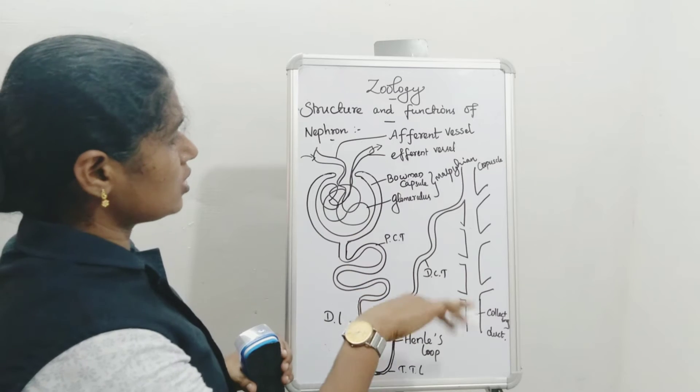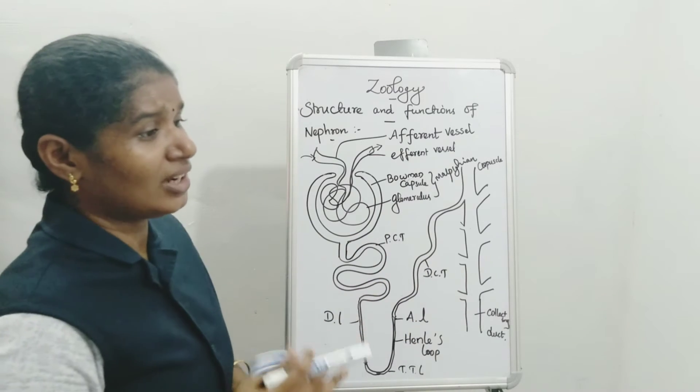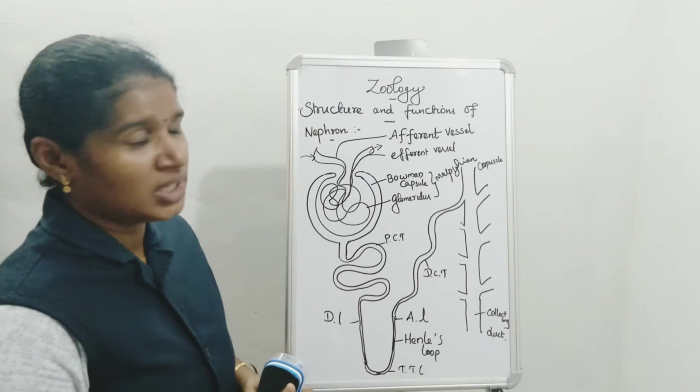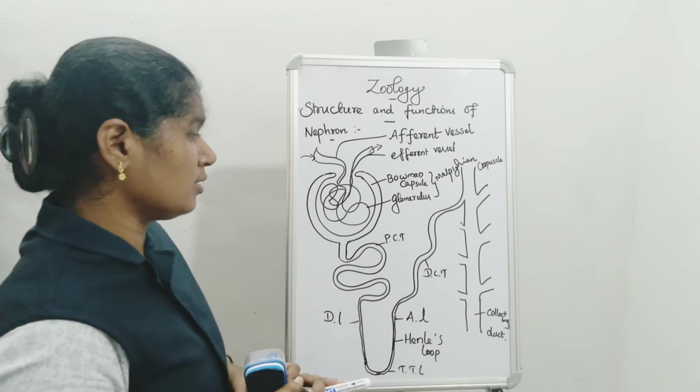For the structure and functions of the nephron, three important functions are required. The first major function is filtration.